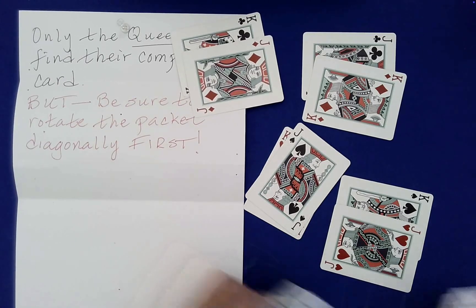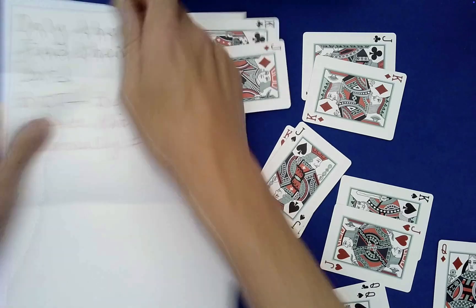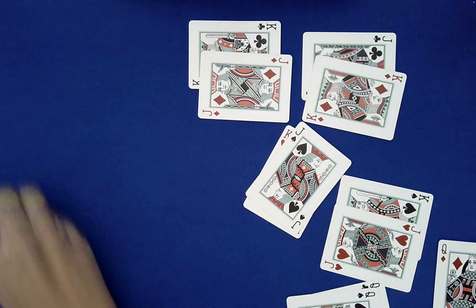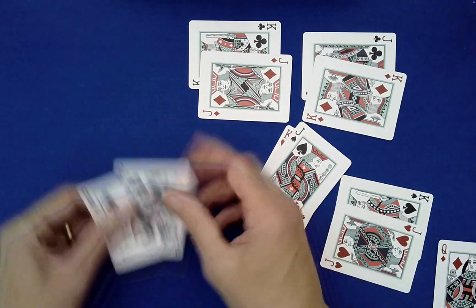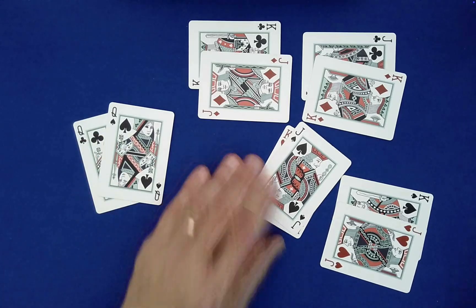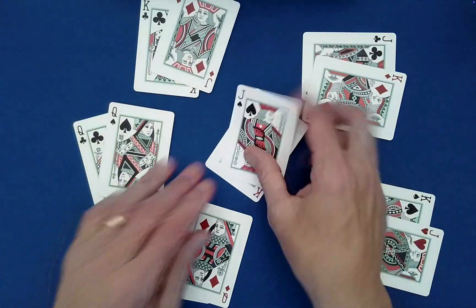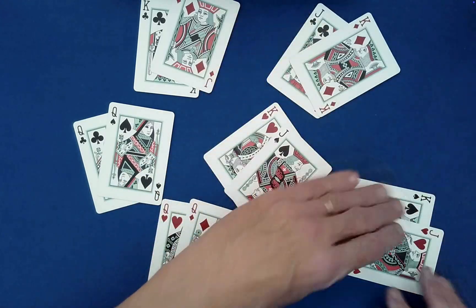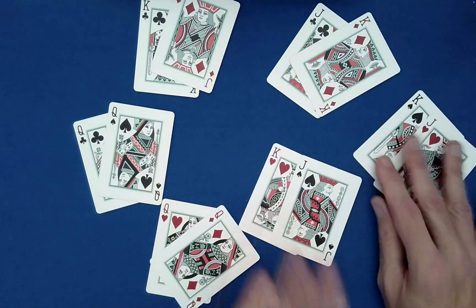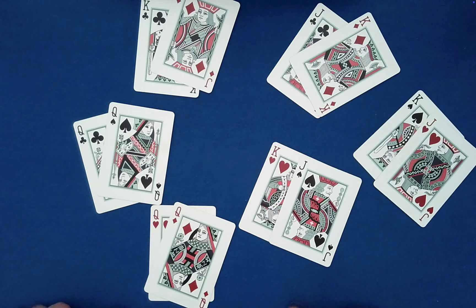Okay, so how does this work? Well, if you start with the packet I showed you, it will work. But quickly, what you do is you pair up the black queens, the red queens, and then you have the kings and jacks not match in value and color.